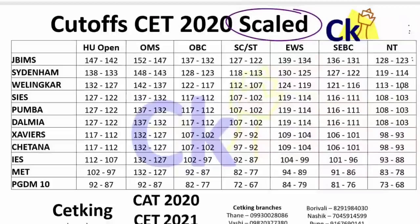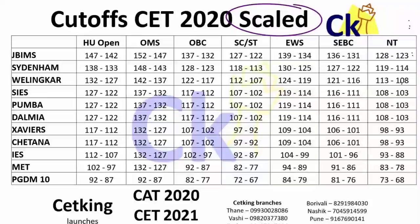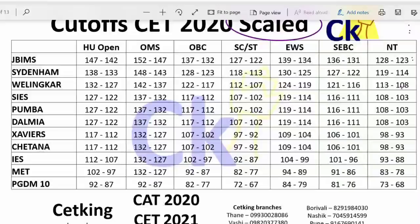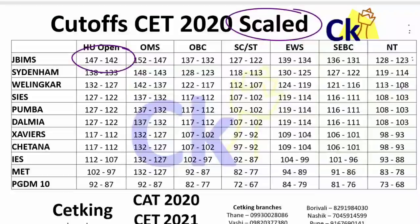Other coaching wale sirf scale score dikhate hai because they are making the cutoff based on last year's cutoff. Last year cutoff 140 tha, is bar 145 ho gaya. Is bar ka paper last year se thoda tough tha - last year logic easy tha: traditional logic me coin decoding, direction sense, blood relations, data sufficiency - sab doable tha. Because of that, last year ka paper was comparatively easier than this year's. Cutoff 147 se badhne ki wajah competition increase ho gayi hai, toh normalization me bhi thoda zyada ho gaya.